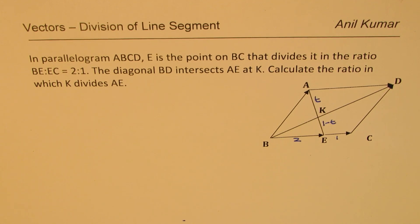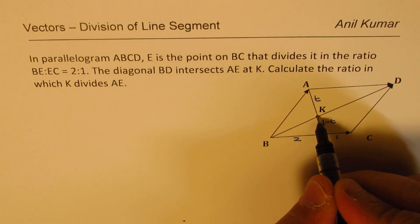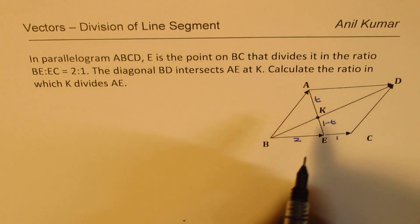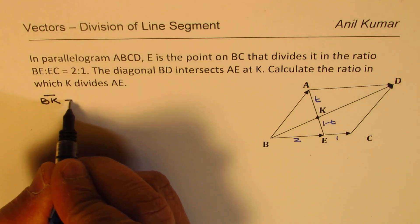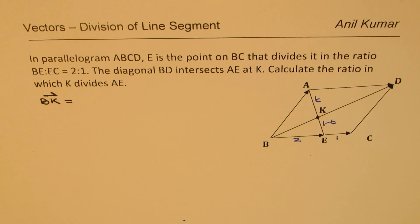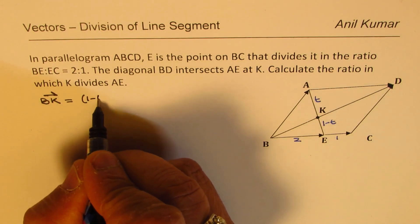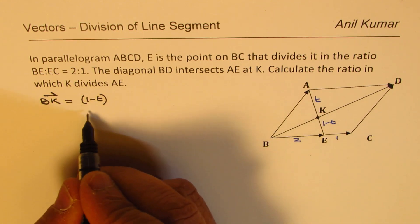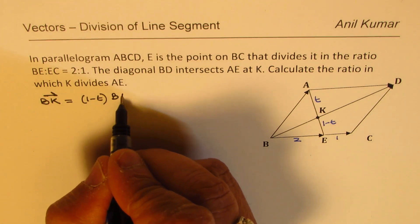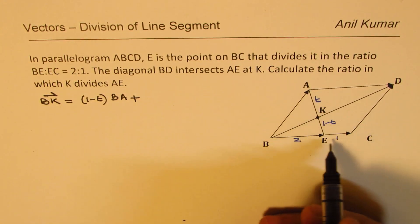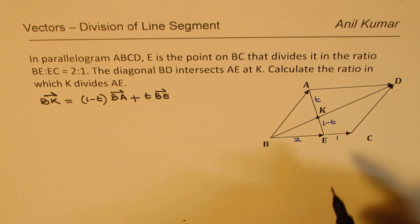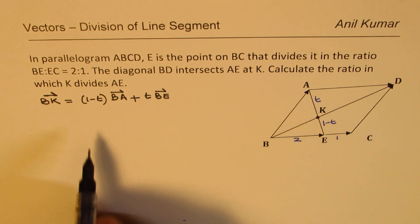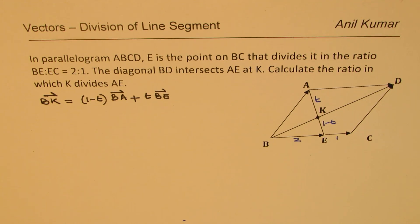Now what we can do here is we can find an expression for BK. So BK, where K is dividing A and E segment in the ratio of T to 1 minus T. BK can be written using the section formula, which is 1 minus T, and the total is 1, so divided by 1, times BA plus T times BE. You clearly see the advantage of taking the sum as just 1 because it avoids all the fractions. So that is one thing very important.